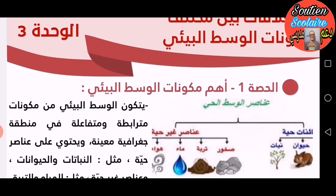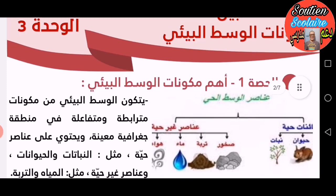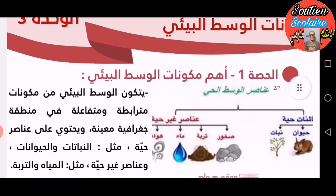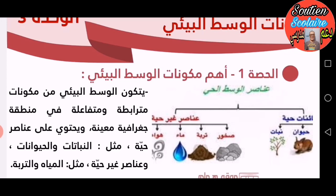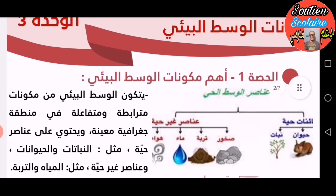يتكون الوسط البيئي من مكونات مترابطة ومتفاعلة في منطقة جغرافية معينة، ويحتوي على عناصر حية مثل النباتات والحيوانات، وعناصر غير حية مثل المياه والتربة.